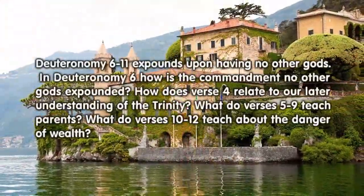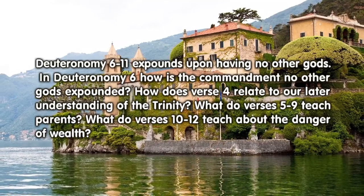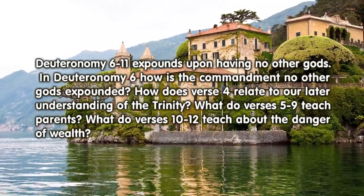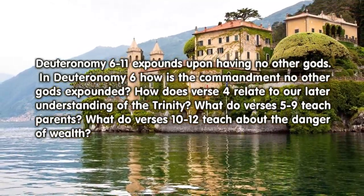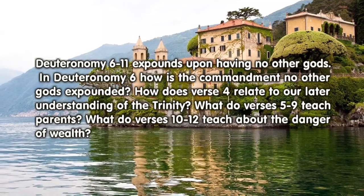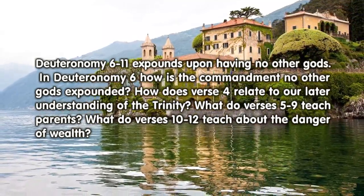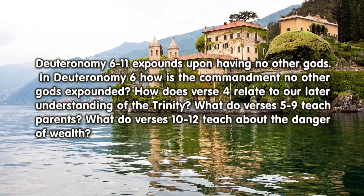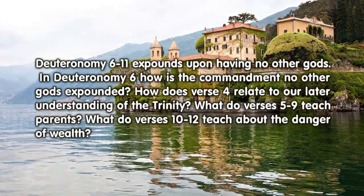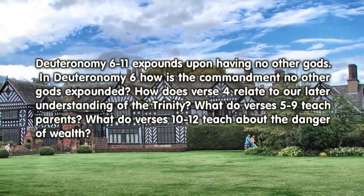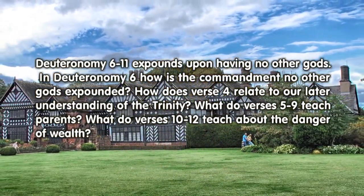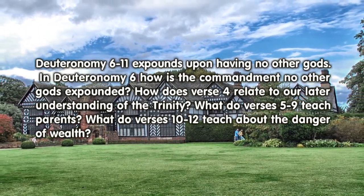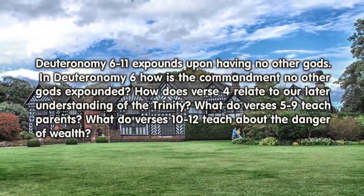Deuteronomy 6 through 11 expound upon having no other gods. In Deuteronomy 6, how is the commandment 'no other gods' expounded? How does verse 4 relate to our later understanding of the Trinity? What do verses 5 through 9 teach parents? What do verses 10 through 12 teach about the danger of wealth?